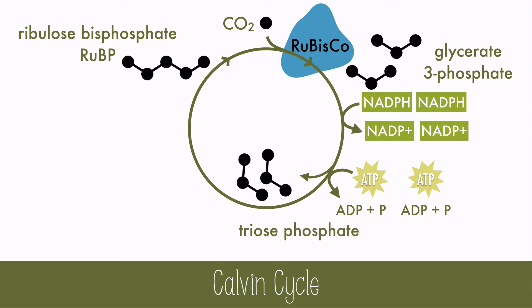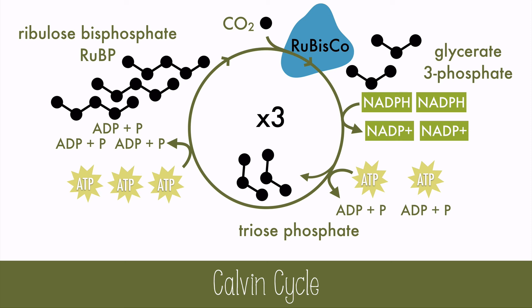Triose-phosphate is really the goal product of the Calvin cycle. In reality, the Calvin cycle will use three carbon dioxide molecules at a time to ultimately produce six triose-phosphate molecules. The triose-phosphate molecule is a simple carbohydrate that can be used by the plant to build larger molecules. However, it's also needed to remake the ribulose bisphosphate used at the beginning of the Calvin cycle. So of the six made, one triose-phosphate will be used by the cell, and the other five will be recycled back into three molecules of RuBP.